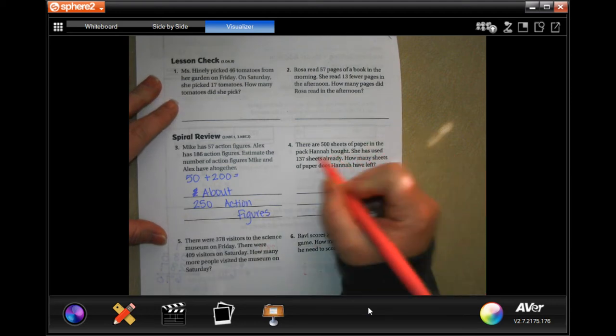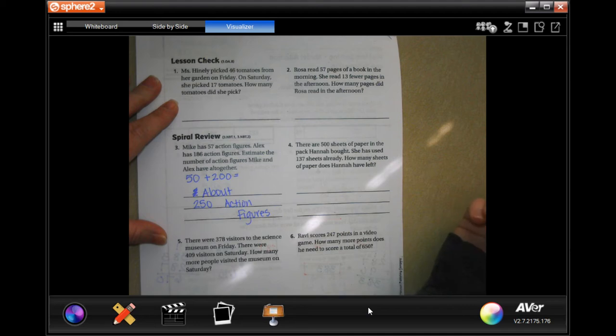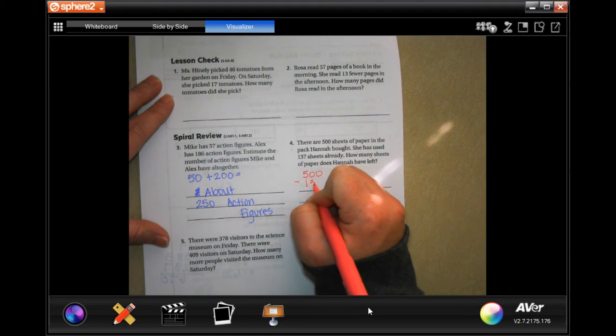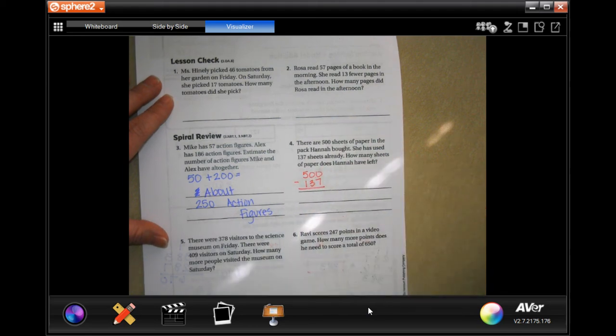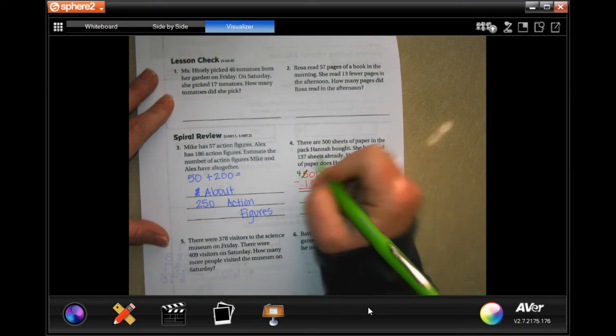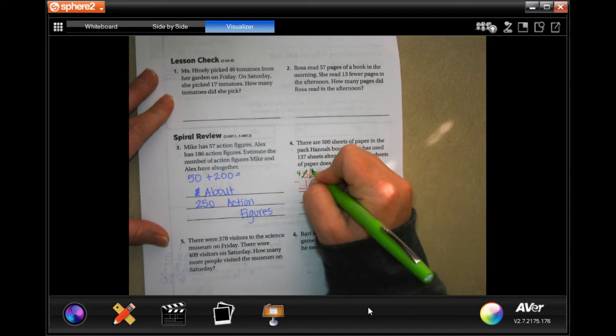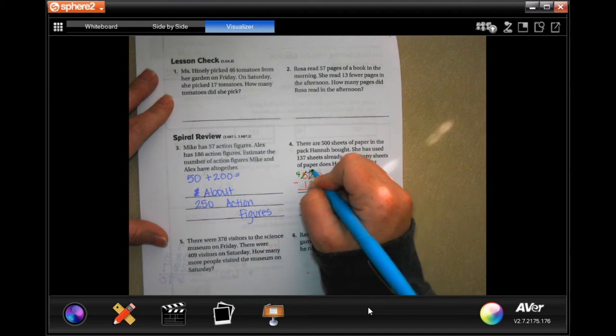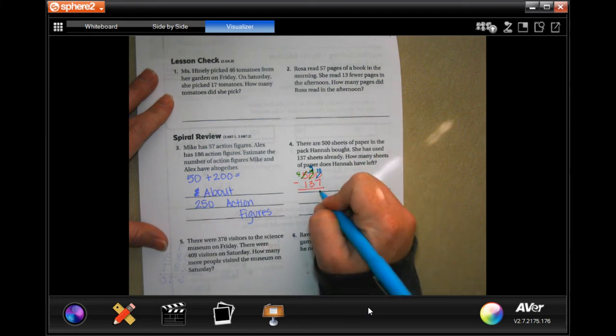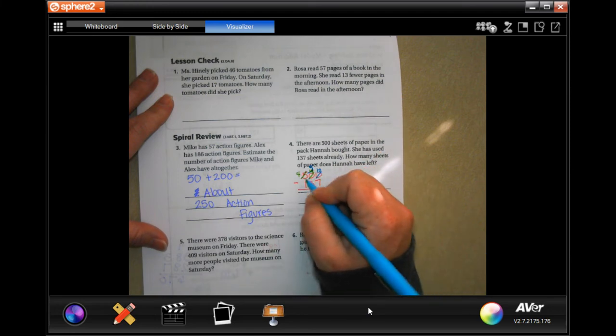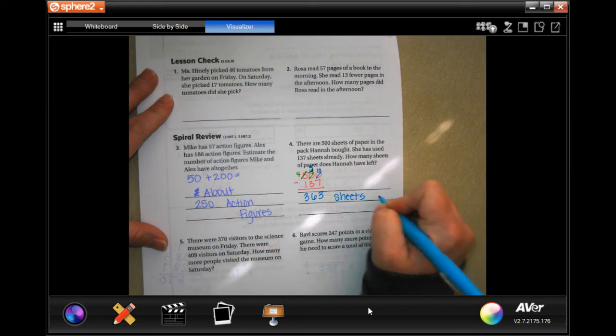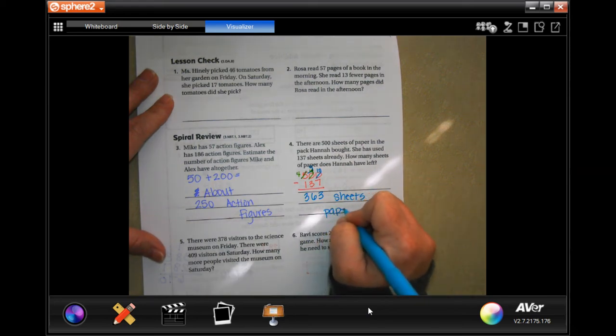There are 500 sheets of paper in the pack Hannah bought. We used 137 sheets already. How many sheets does she have left? So, 500 minus 137. So, they're trying to get tricky on it. Zeros can't take away anything. So, we're going to go all the way over to the 5 and make it a 4, which makes this one a 10. However, I have to borrow one for this. So, now that's a 9 and this one's a 10. So, now 10 take away 7 is 3, 9 take away 3 is 6, and 4 take away 1 is 3. 363 sheets of paper.